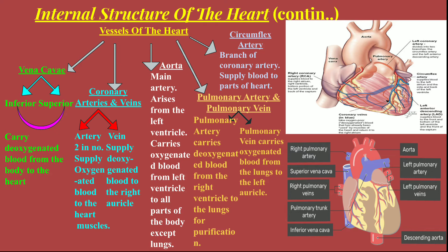Next is the aorta — the main artery of our body, starting from the left ventricle. It carries oxygenated blood from the left ventricle and distributes it to all parts of the body, except the lungs.